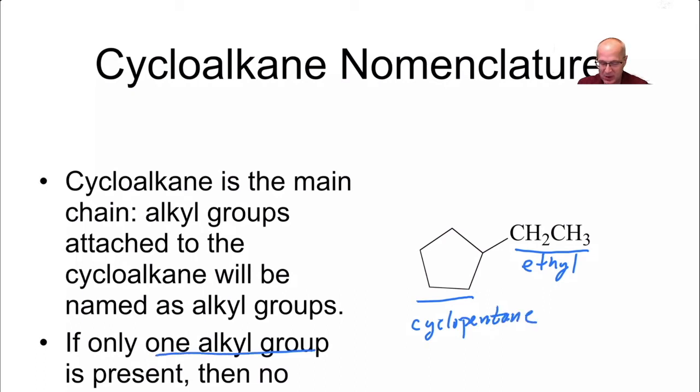Now, when only one alkyl group is present on that ring system, you don't need to number it. So this is not one ethylcyclopentane. Nope. This simply is just ethylcyclopentane. All right? Very simple.